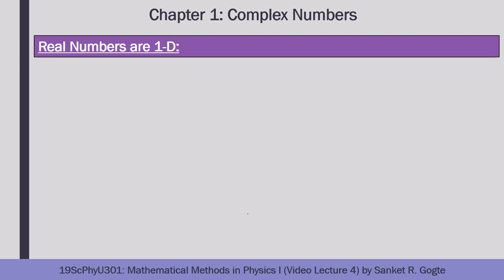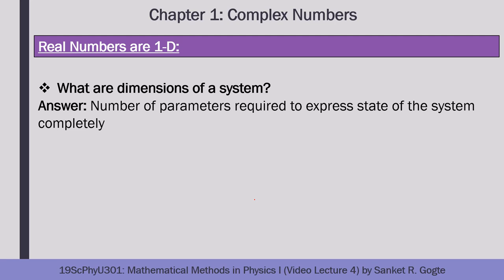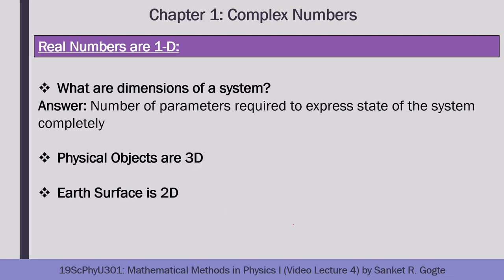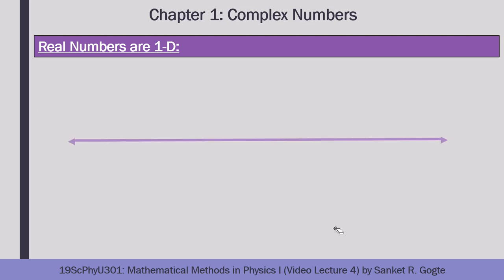Let us ask ourselves: what are the dimensions of a given system? The simplest answer is that the number of parameters needed to fully express the system are called its dimensions. An object with height, width, and depth is three-dimensional. The surface of the earth is two-dimensional — we specify any position using latitude and longitude. A real number is clearly a one-dimensional system, and since it is one-dimensional, it can be plotted on a one-dimensional figure, which is a straight line.